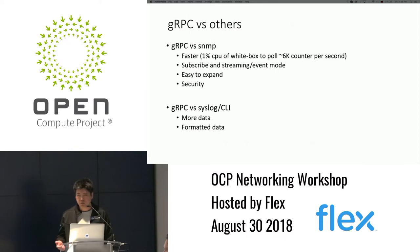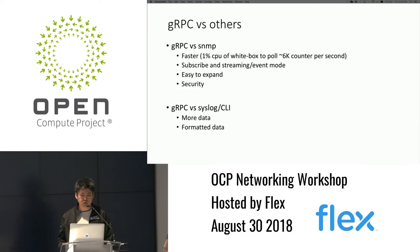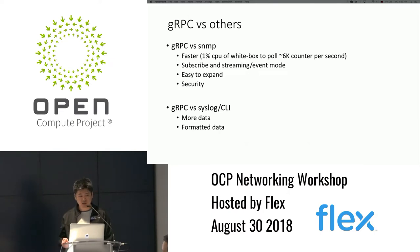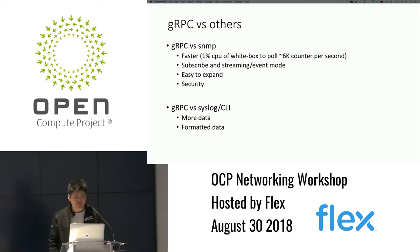SNMP is typically a polling mode where you pull data every interval. But with the gRPC approach, we can do a subscribe mode — you can subscribe to any data you're interested in and use streaming mode or event mode. It's also very easy to expand. If you want any new data, you don't need to write a new SNMP OID to expose it; it's just a key-value pair in your database that you can directly get. Security is also better because you use TLS.